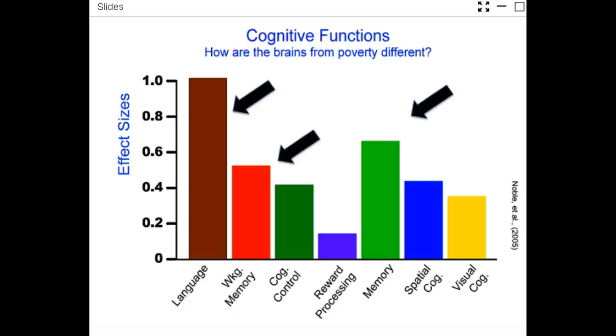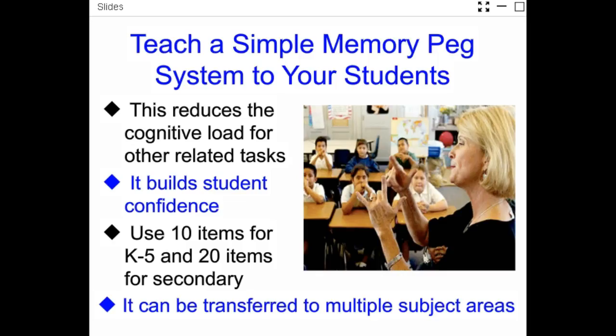Most teachers understand the language gap, but they don't know that memory is actually number two. So teach students simple peg systems — meaning hooks. For example, one is the sun, two is a shoe, three is a tricycle because there are three wheels on it. Teach a simple peg system to kids so they can start memorizing things. You think you shouldn't teach memorizing — that's a huge mistake, and I just showed you why.